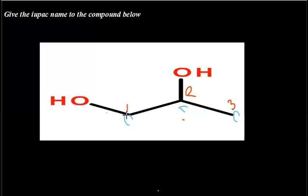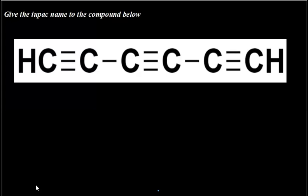Considering our substituent branches — this is a diol, an alcohol group, not an alkane group — we get propane-1,2-diol. The correct name for this compound is propane-1,2-diol, which can also be written as 1,2-propanediol. Before I go today, I'll be leaving you with one more compound — try and name it and leave your answer in the comment section. If you have not subscribed, please ensure to subscribe.